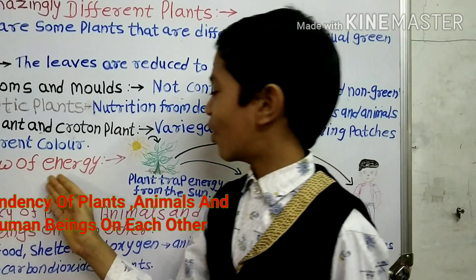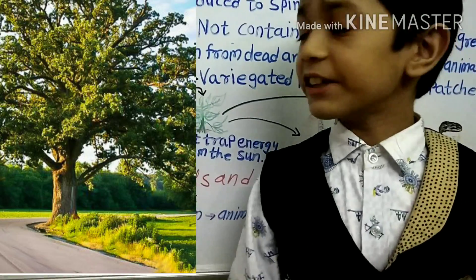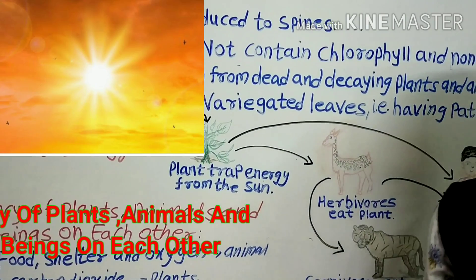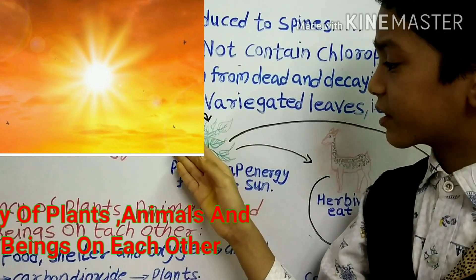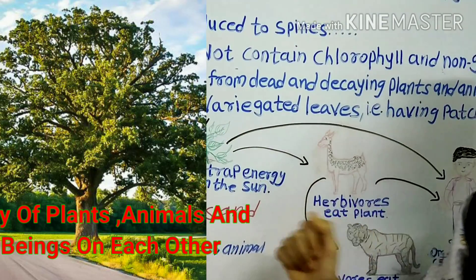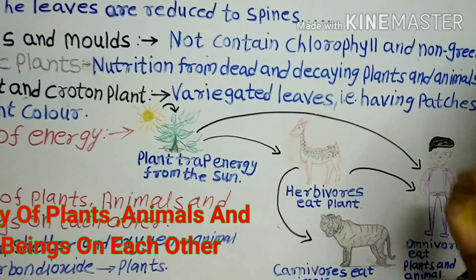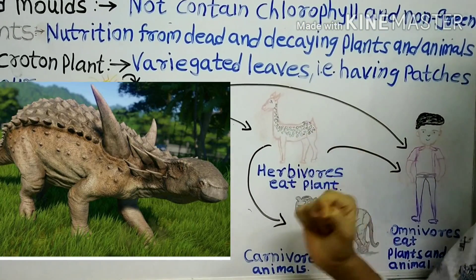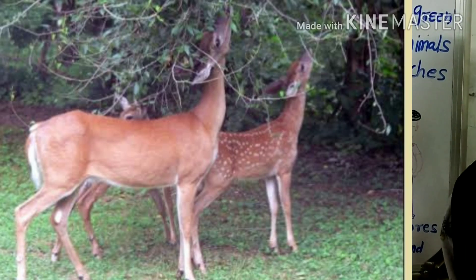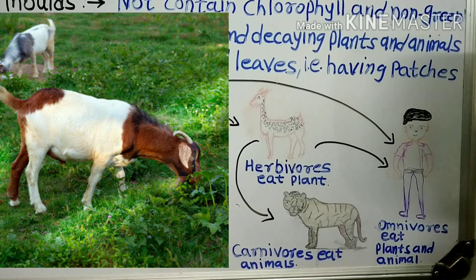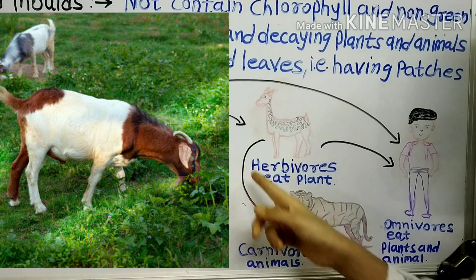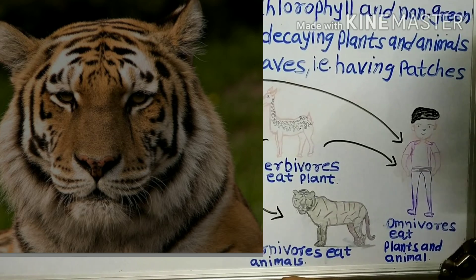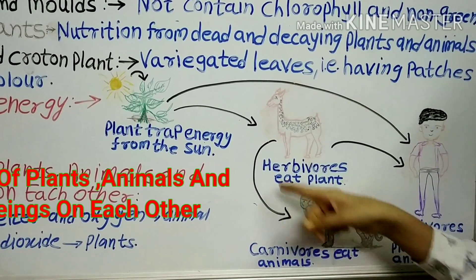Now let's look at the flow of energy. Only plants are the source that transport the sun's energy to humans and animals. Herbivores eat only plants — like deer, elephants, and goats. Carnivores eat only animals — like tigers and lions eat these herbivores.